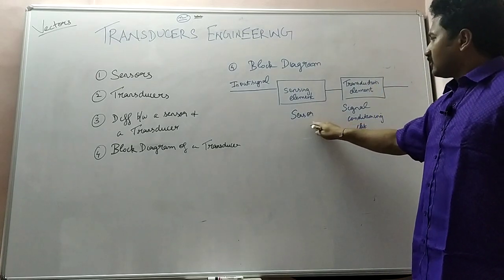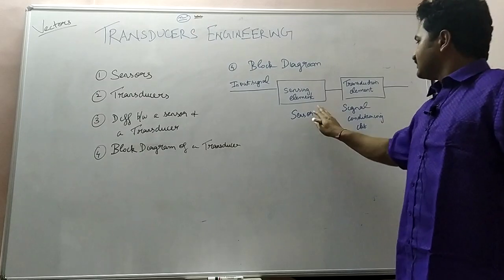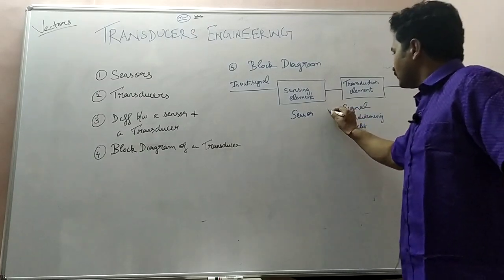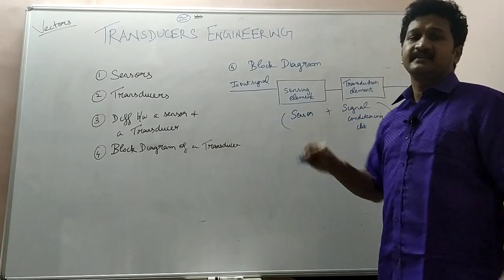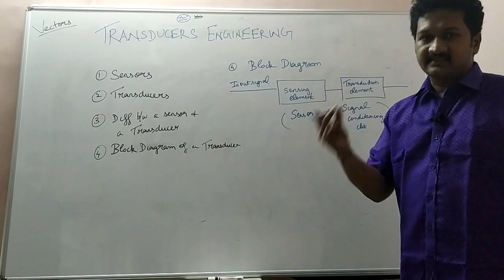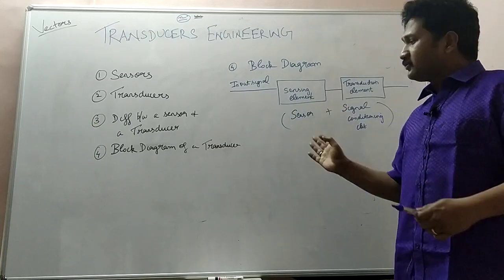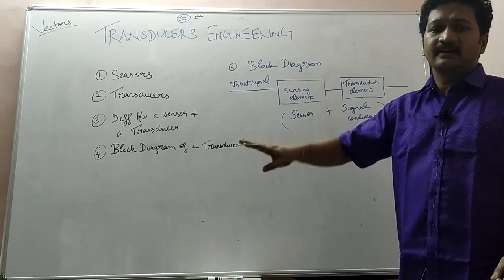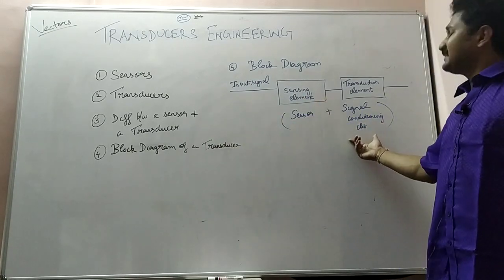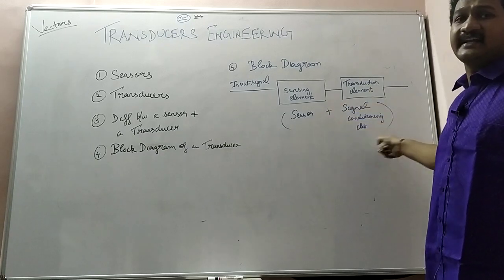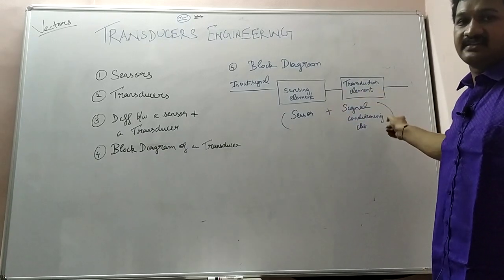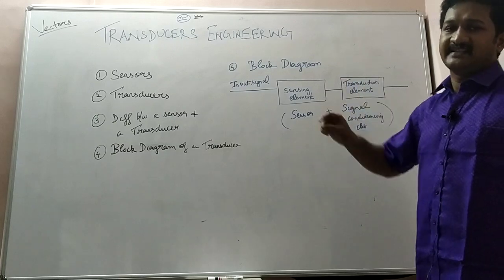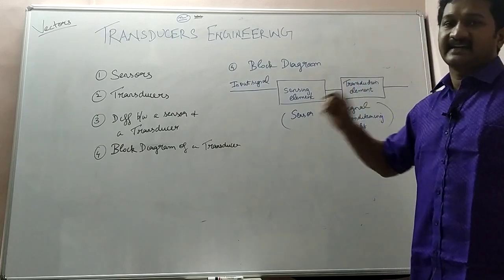For explaining about the sensor plus signal conditioning circuit, best example is the strain gauge. Strain gauge is a sensor, and when we put the strain gauge in a Wheatstone bridge circuit and convert the displacement into voltage, that becomes the transduction element. That transduction takes place because of the Wheatstone bridge where the strain gauge is placed or connected.